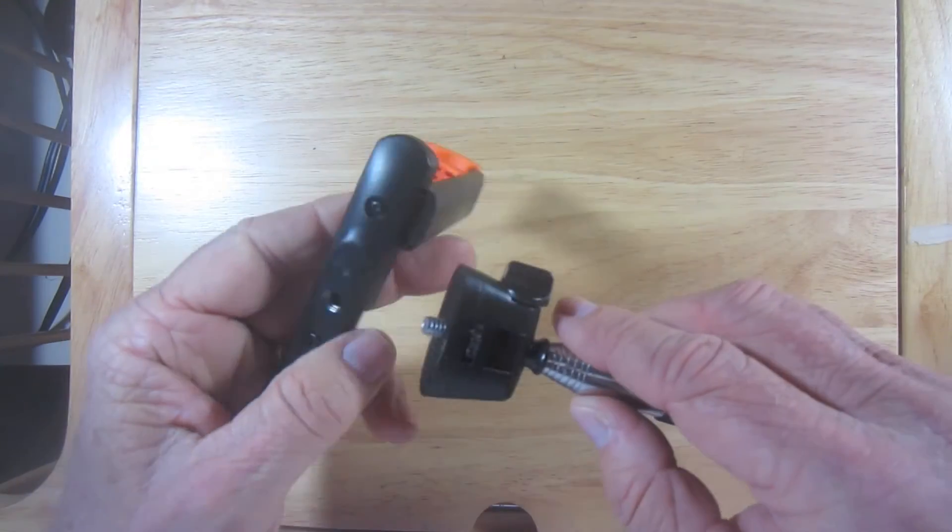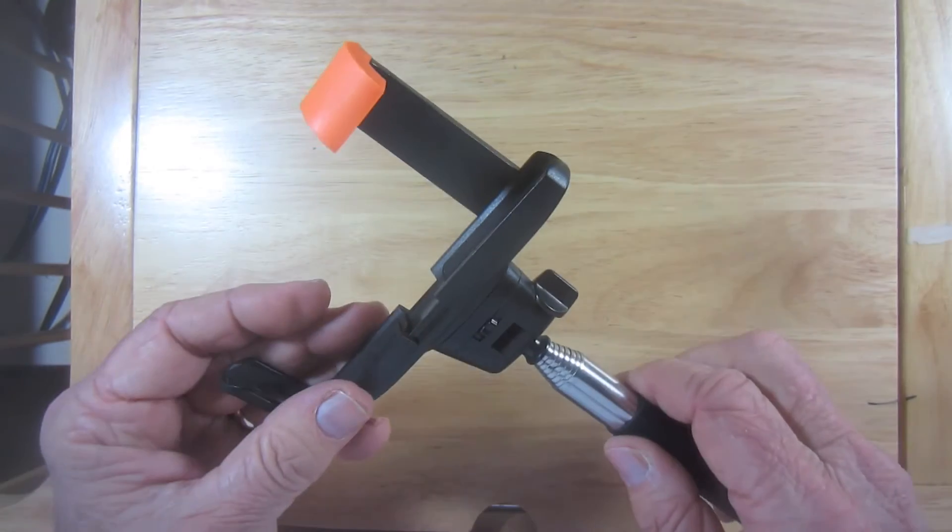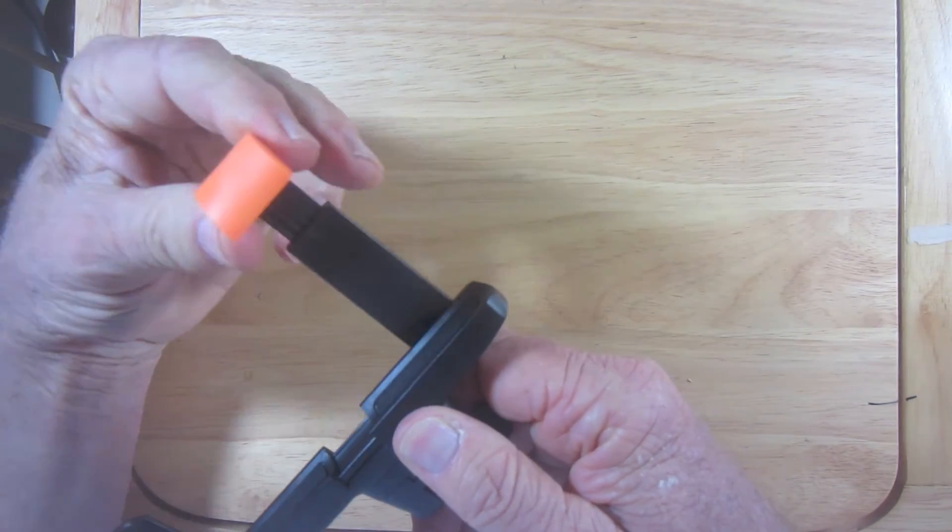Join the pieces together and tighten with the thumb screw. Notice that the bracket is spring-loaded to securely hold your phone.